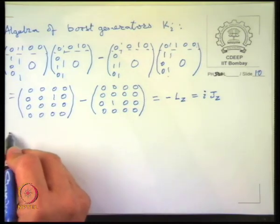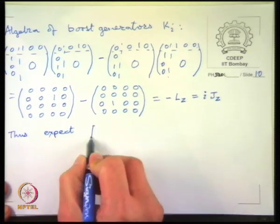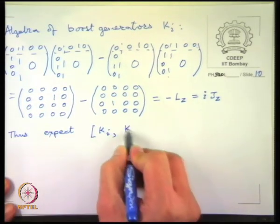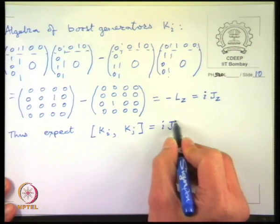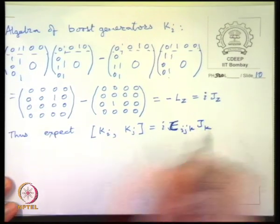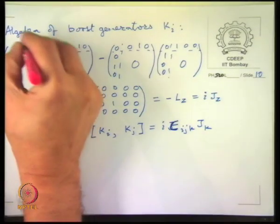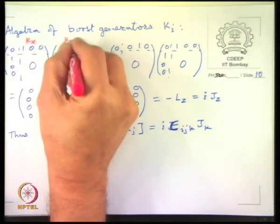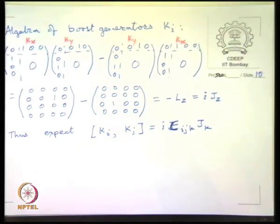So we expect that [k_i, k_j] produces i times ε_{ijk} J_k. If I take kx and ky, this produces J_z. So we expect the algebra is [k_i, k_j] = i ε_{ijk} J_k.